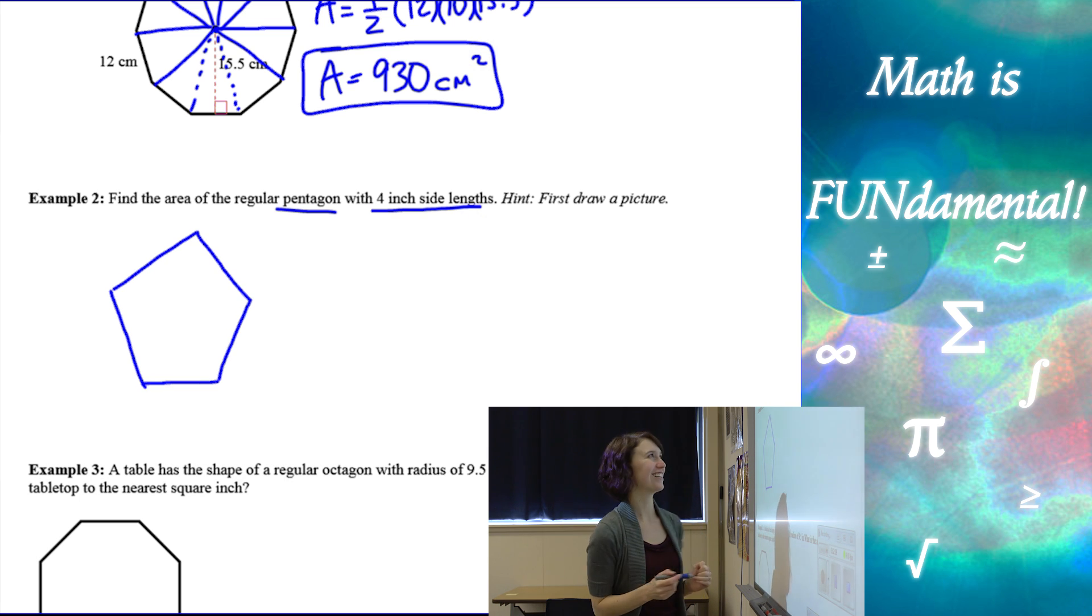It's always helpful to draw a picture. So try to make a regular pentagon. That's about as good as mine is going to get. Alright, we have our center of our polygon. We know that our side lengths are four inches, and that's it. That's all the information we're given.